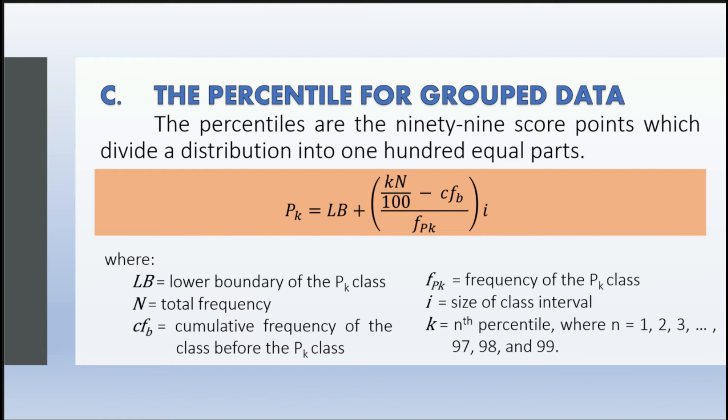In the percentile formula: lb is the lower boundary of the Pk class, n is the total frequency, cf sub b is the cumulative frequency of the class before the Pk class, f sub Pk is the frequency of the Pk class, i is the size of the class interval, and k is the nth percentile wherein it can be 1, 2, 3, and so on until we reach 99.